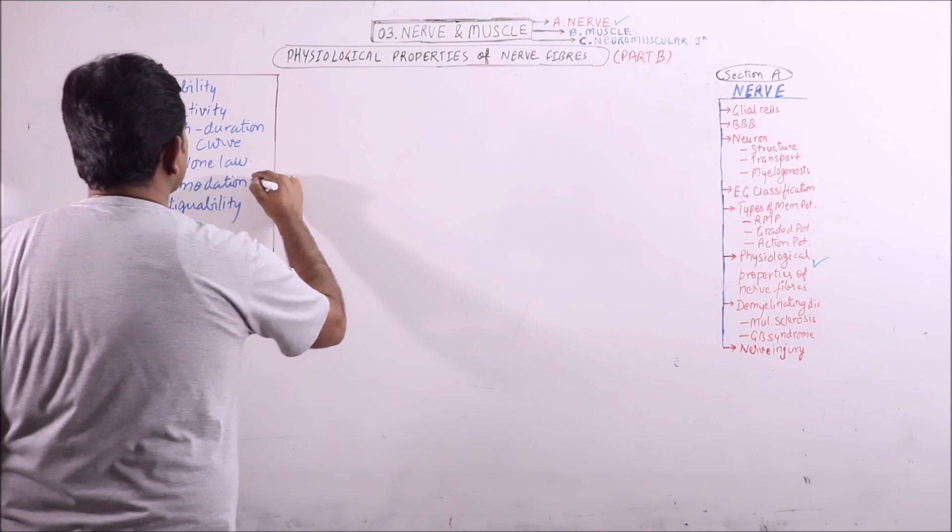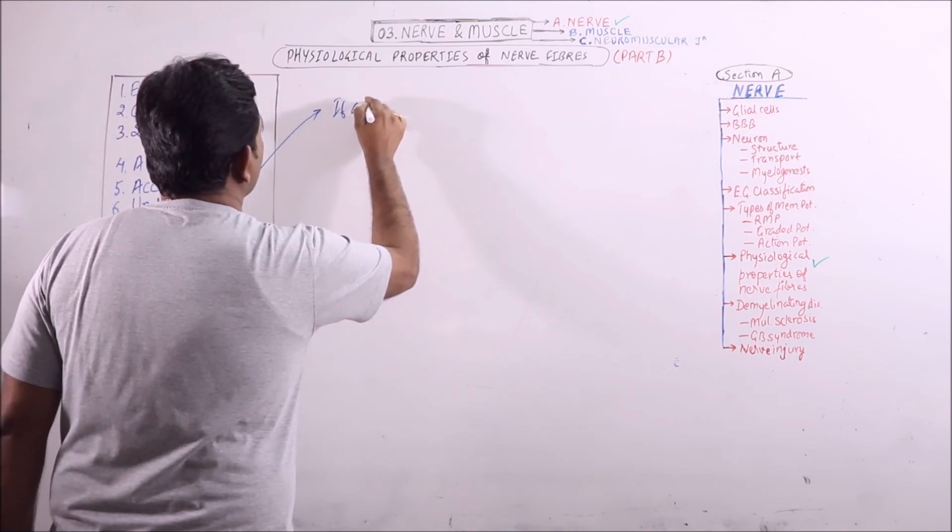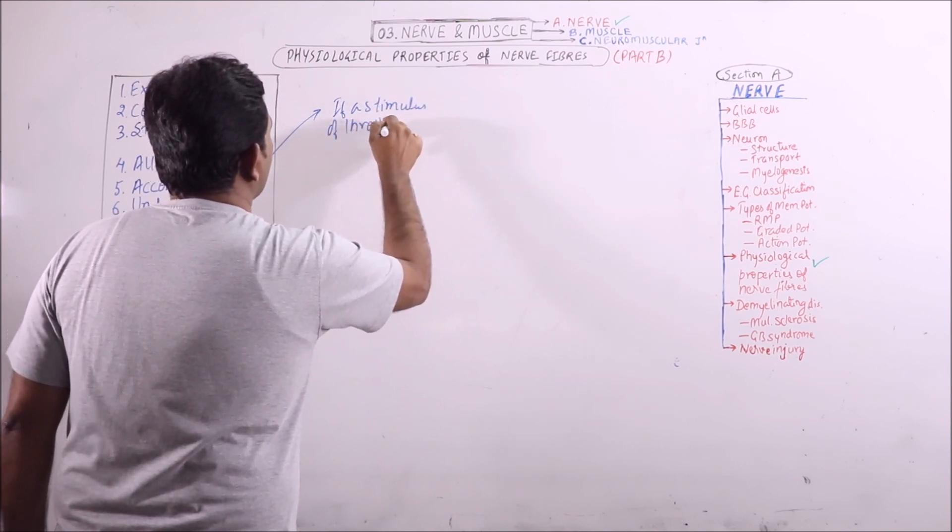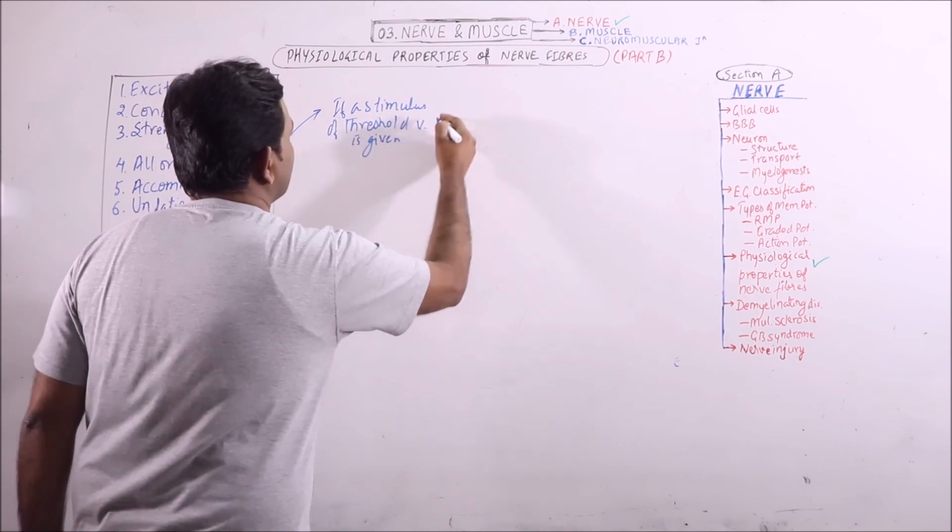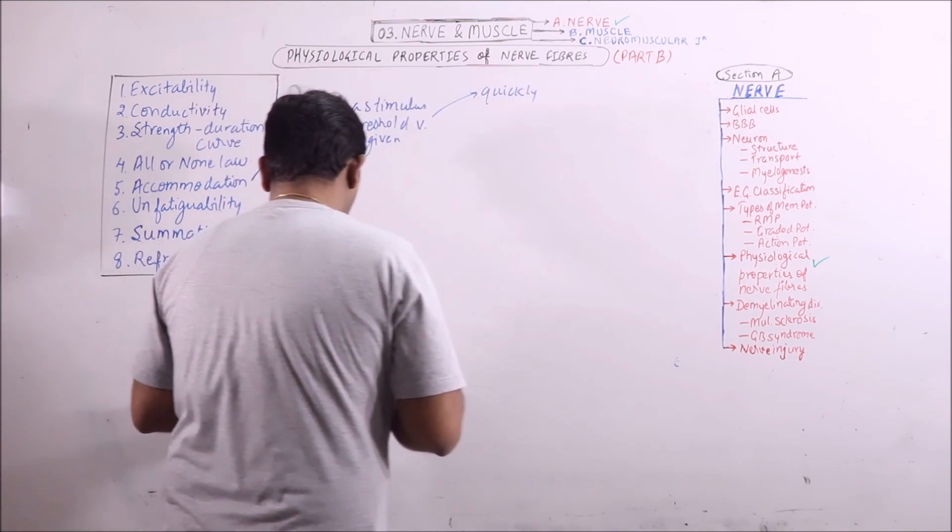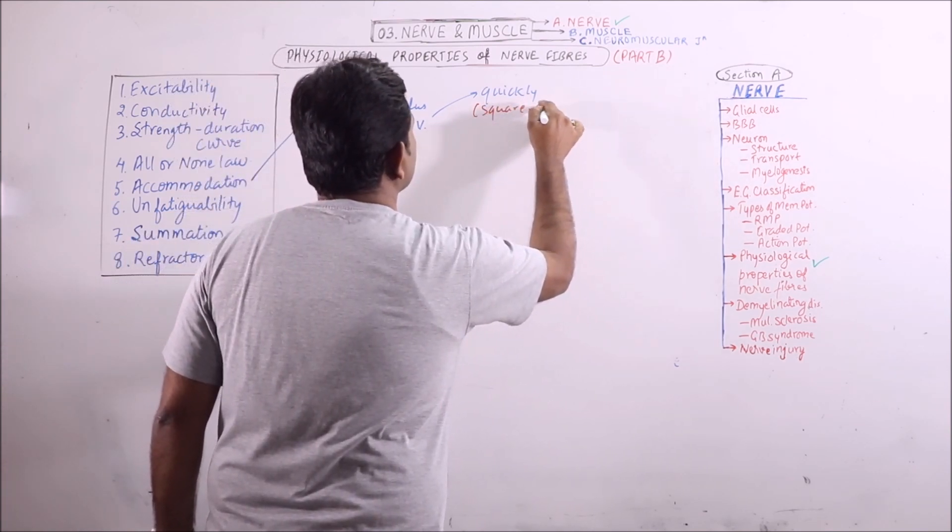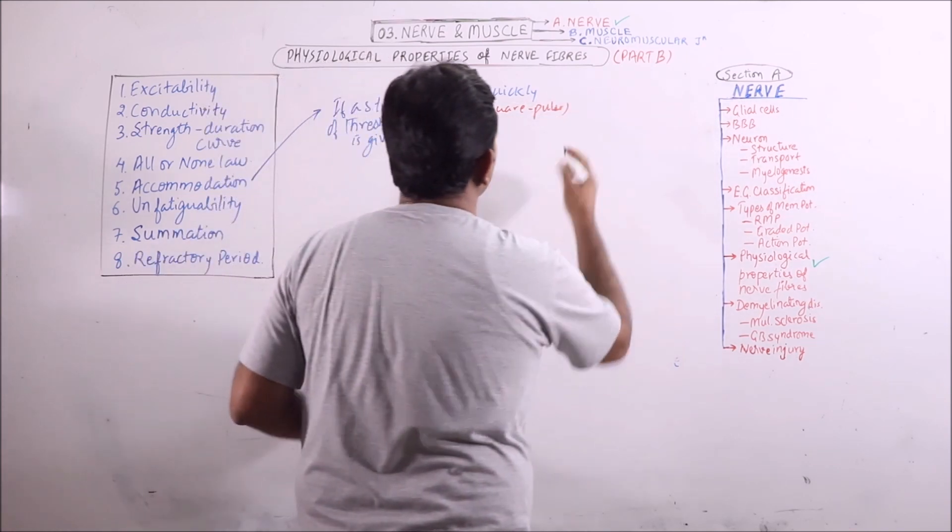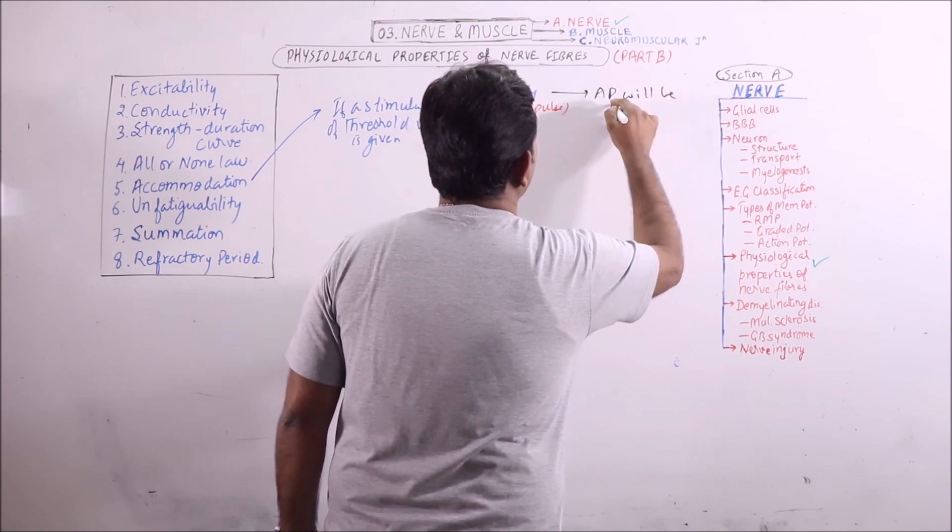Now, accommodation. What is accommodation? If a stimulus of threshold value is given quickly, in this case it is known as square pulse, then action potential will be produced.